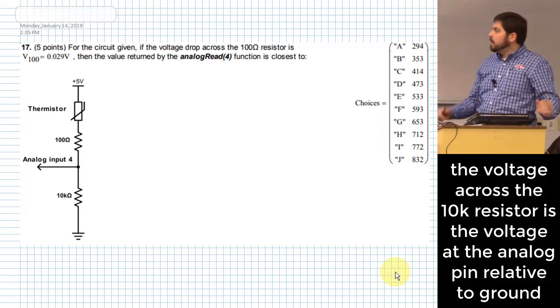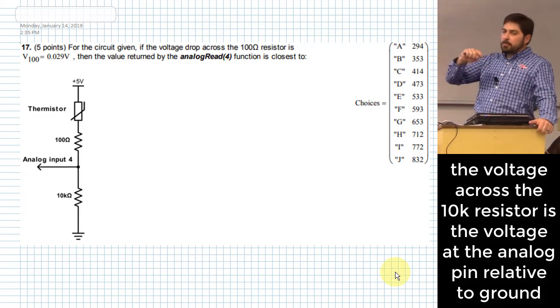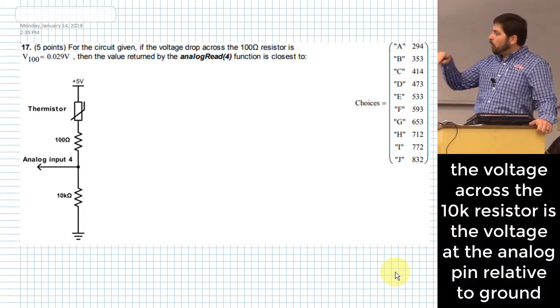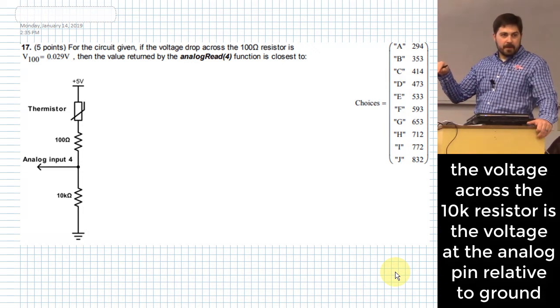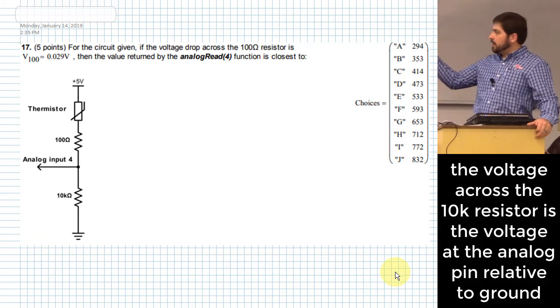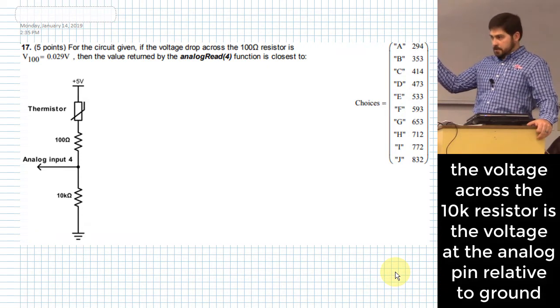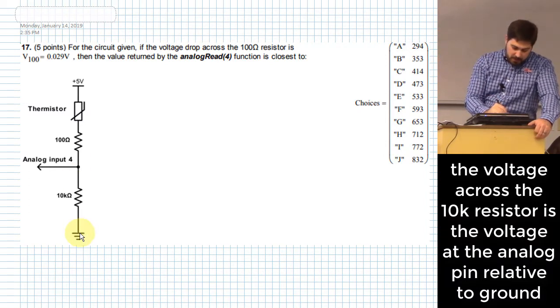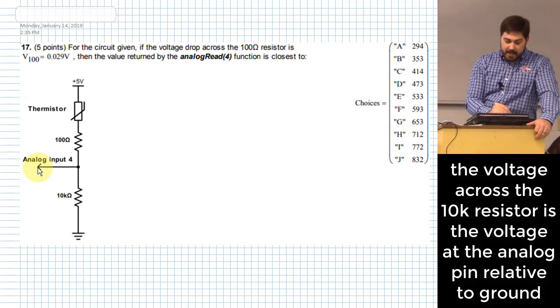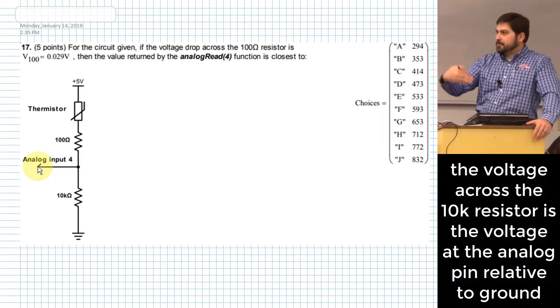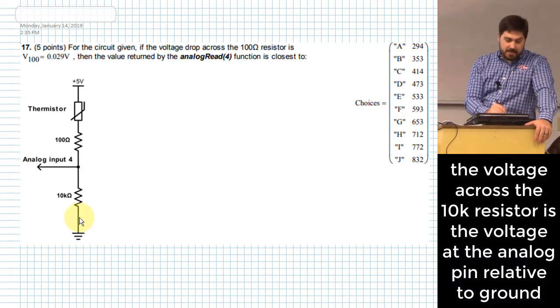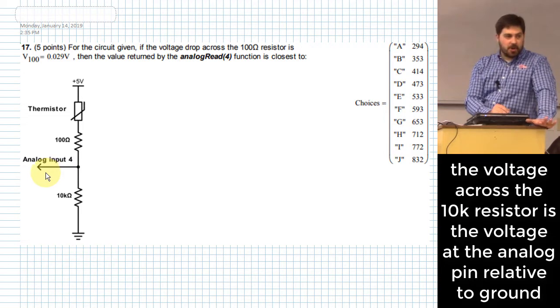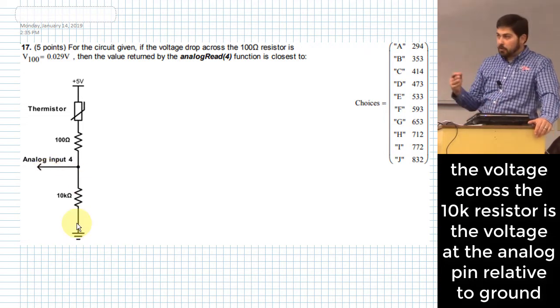So we'll do the circuits problem first. Ultimately, what we need for the Arduino problem is we need to know what voltage is being put into analog input 4. And what voltage is that? It's the voltage across the 10k ohm resistor. Since the 10k ohm resistor is relative to ground, and since the voltages that the Arduino is measuring are going to be relative to ground, it's whatever voltage across this 10k, that's the voltage that we are going to see on analog input 4. So once we figure out voltage across that 10k, we're basically done.